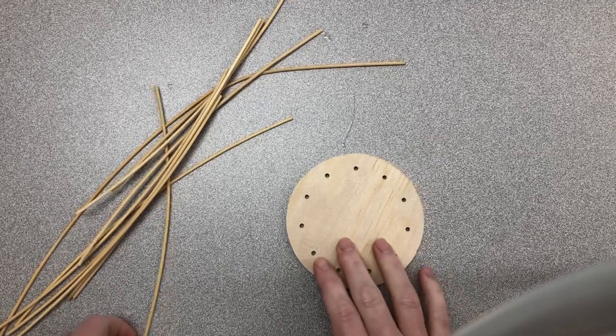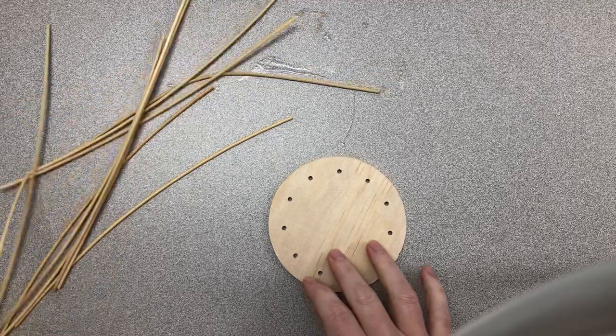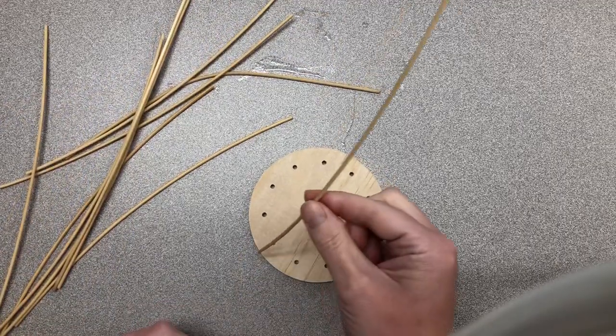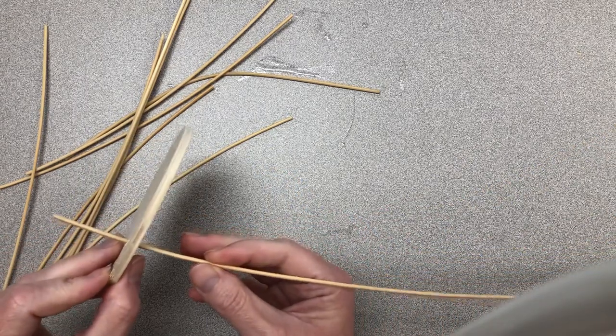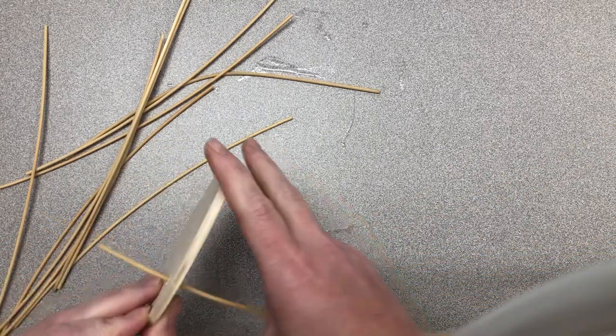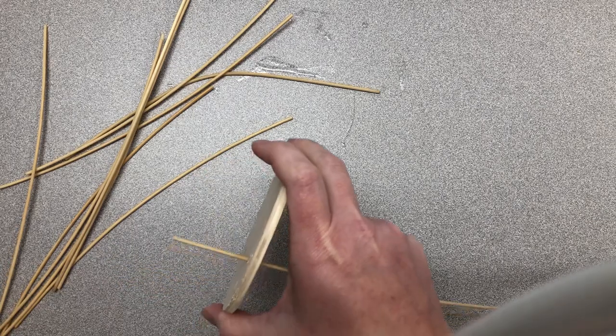So this is how you're going to be putting the spokes into your basket. You're going to poke one of these 10 inch long reeds in here and you want them to stick out two inches on the bottom.